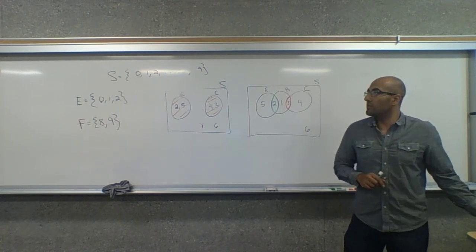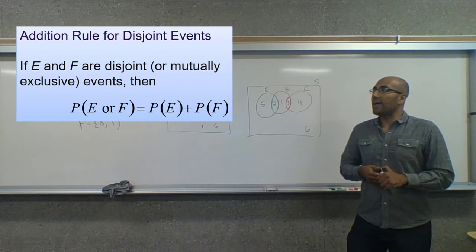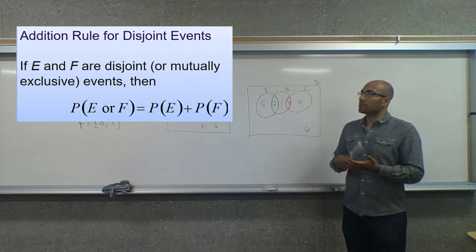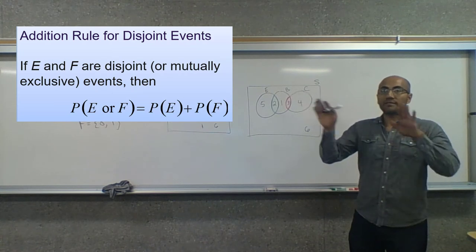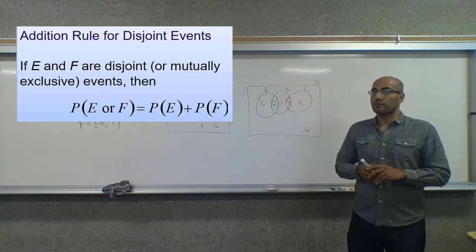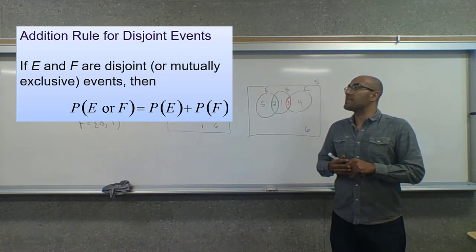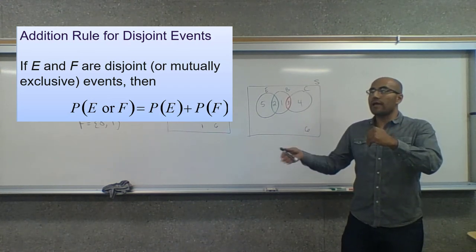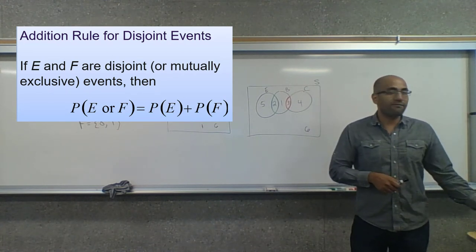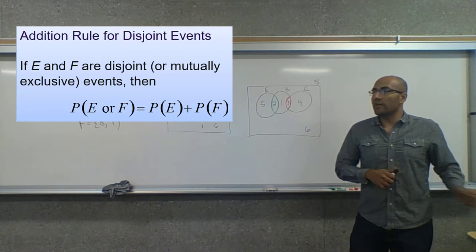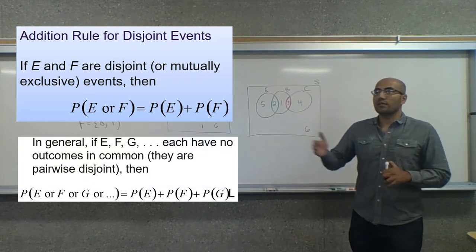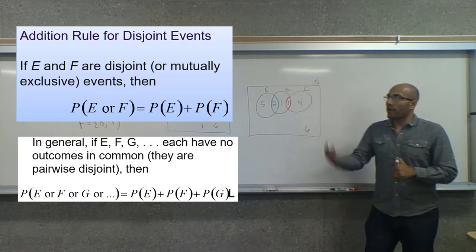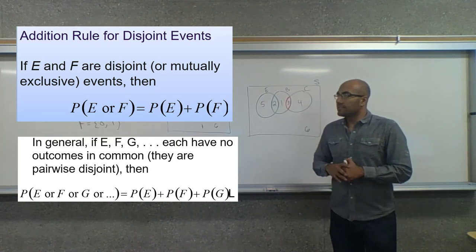This leads to the addition rule for disjoint events: if E and F are disjoint or mutually exclusive events, then the probability of E or F is equal to the probability of E plus the probability of F. We can extend this to many events: if E, F, G, and so on all represent mutually exclusive events with nothing in common, then the probability of E or F or G or so forth equals the sum of each of those individual probabilities.